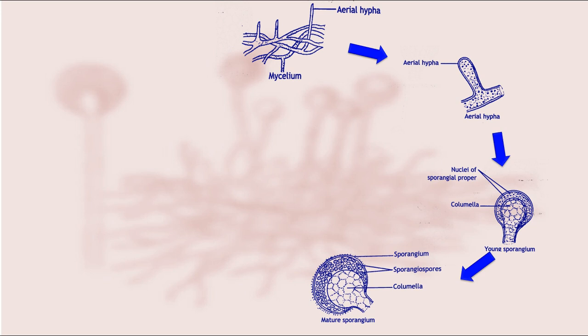The aerial hypha bearing sporangium is called sporangiophore. Matured sporangium bursts due to pressure exerted by columella and spores are disseminated by wind.